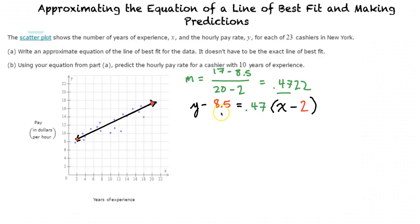We can add 8.5 to this side and distribute the 0.47 into the equation to leave us off with y equals 0.47x minus 0.47 times 2 plus 8.5, because we add the 8.5 to the right.